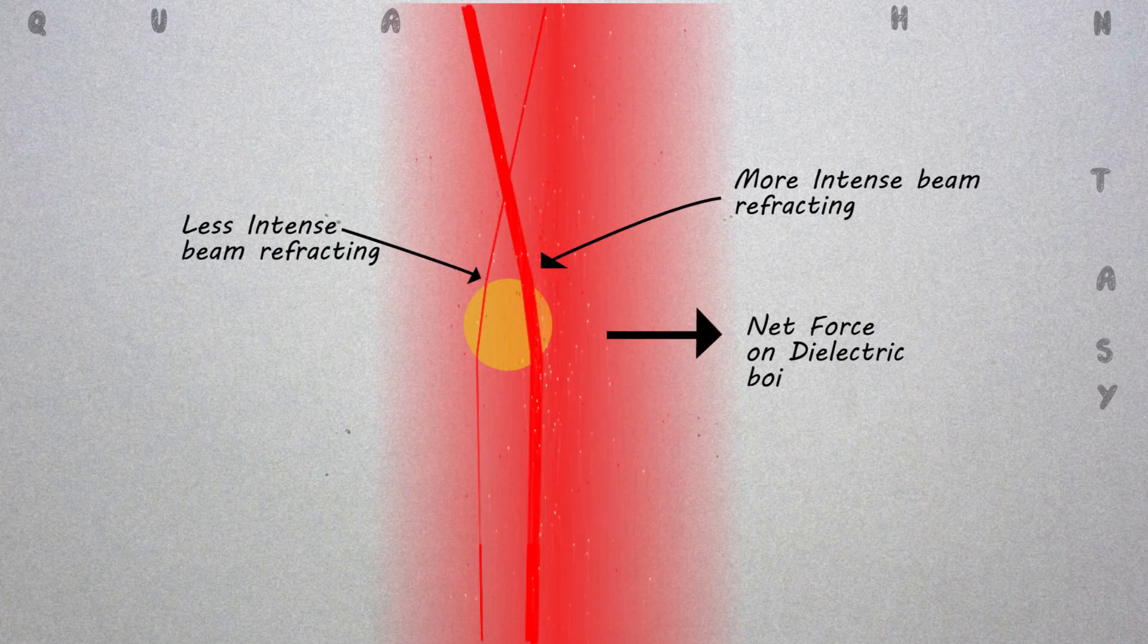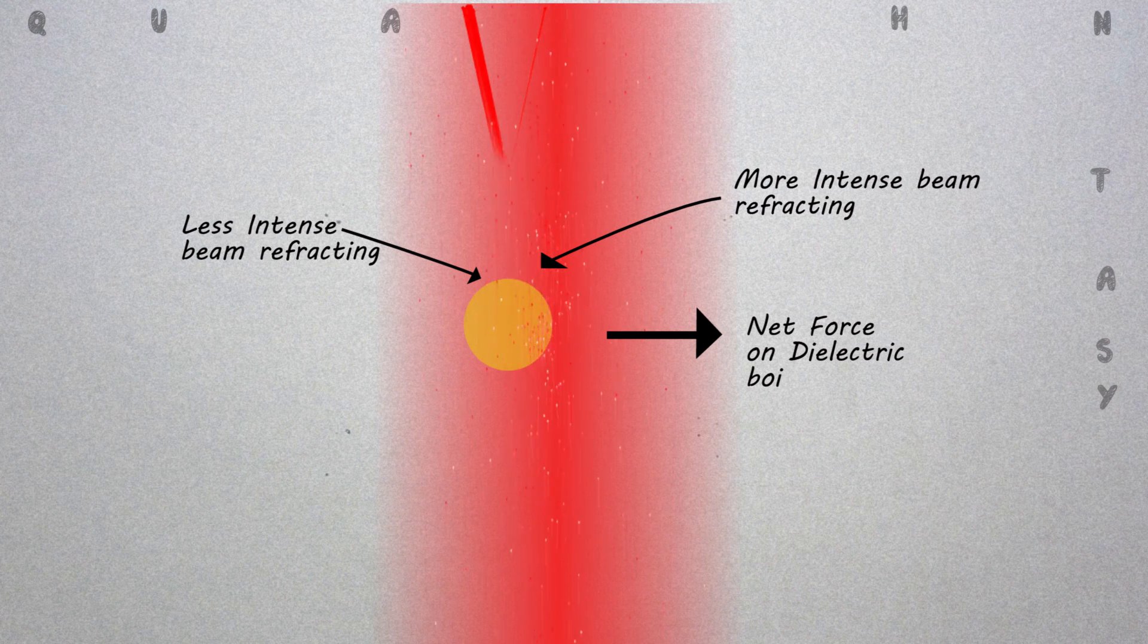The particle has a net force returning it to the center of the trap because more intense beam imparts a larger momentum change toward the center of the trap.